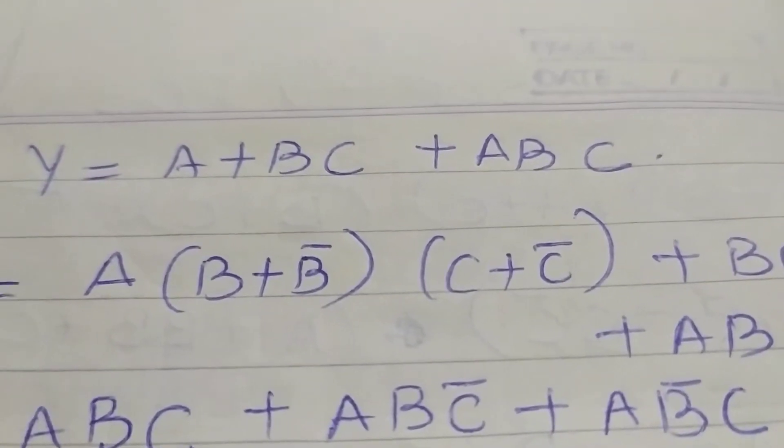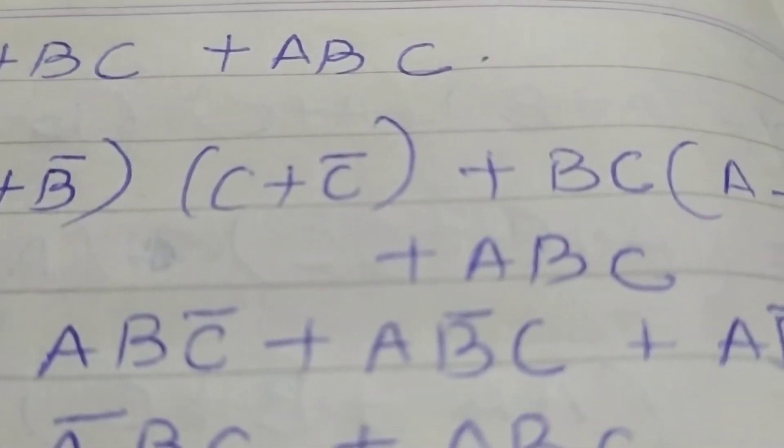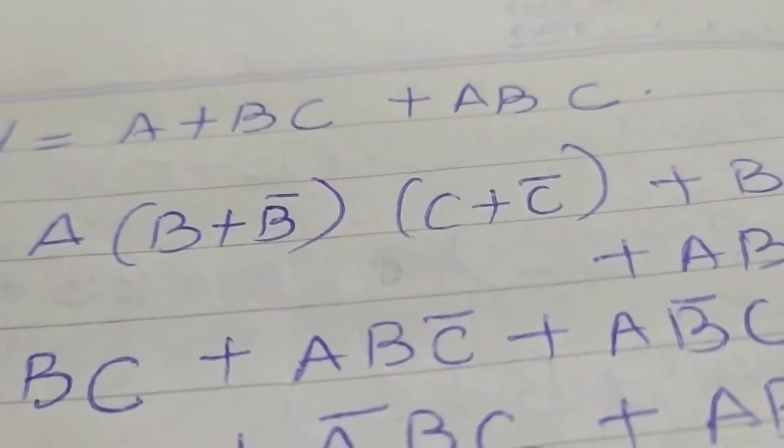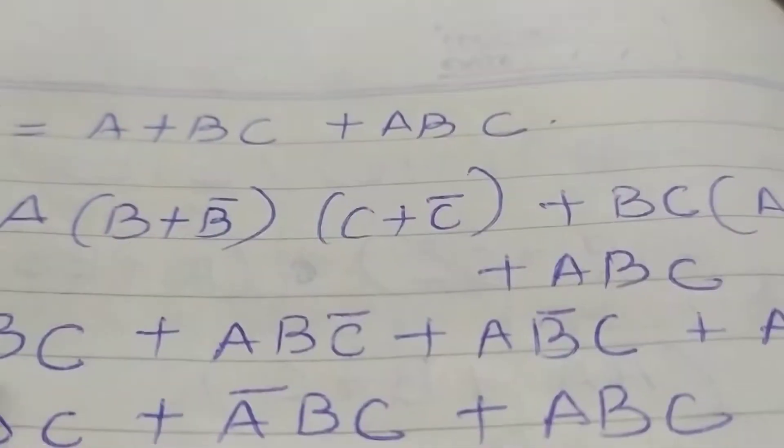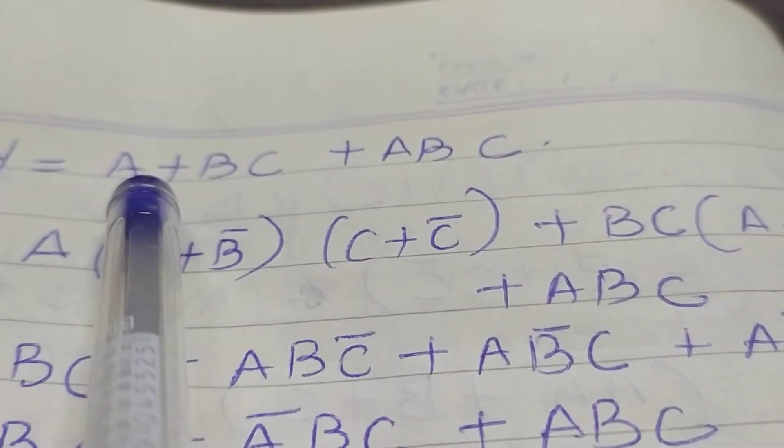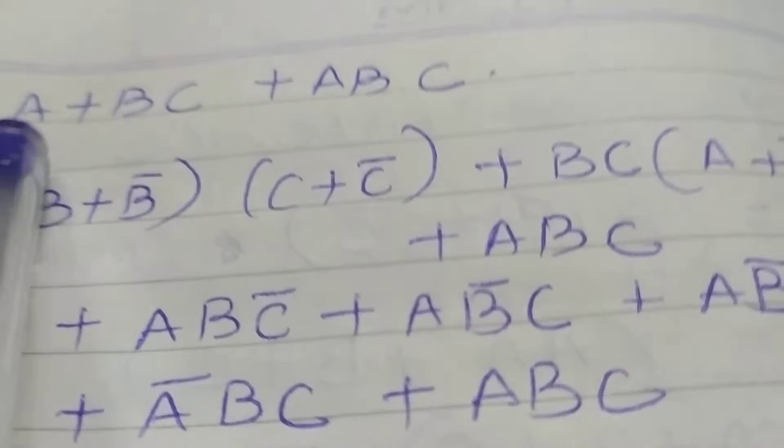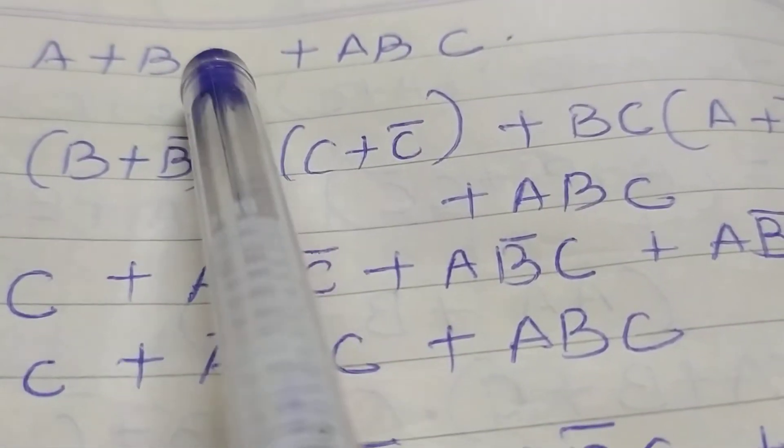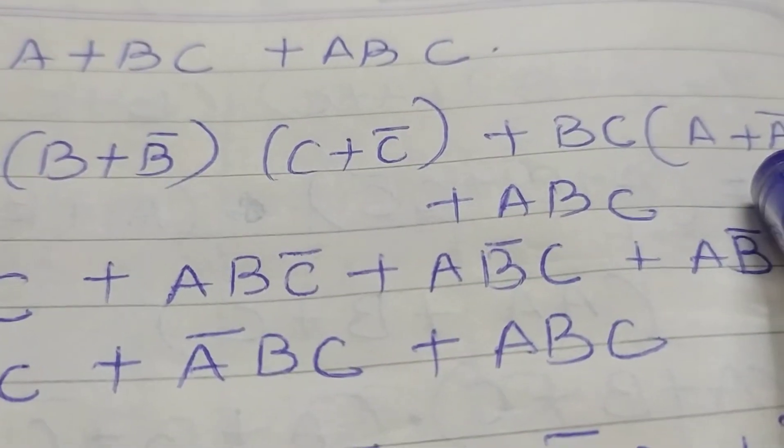Okay, you even get a question like that: Y is equal to A plus BC plus ABC. So you will use both the B term and C term. Second, you have only the A term missing.